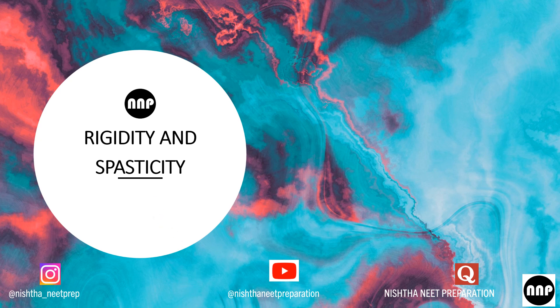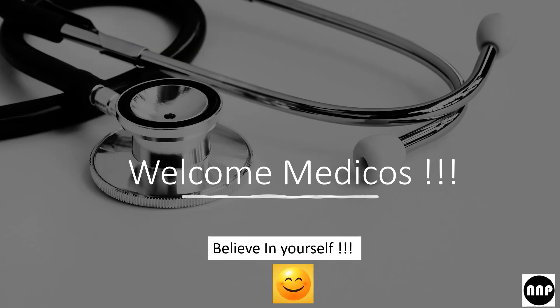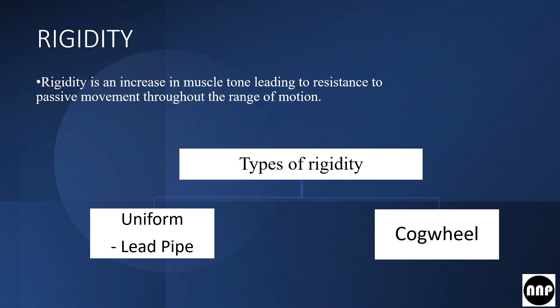Today's topic is rigidity and spasticity. Rigidity is an increase in muscle tone which leads to resistance to passive movements throughout the range of motion. The key concept is increased muscle tone and resistance to passive movement, meaning the patient should not use their own power to move the limbs.